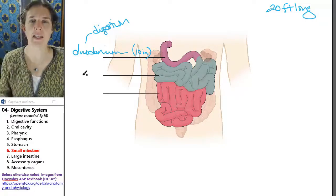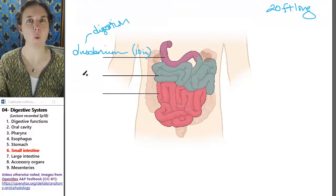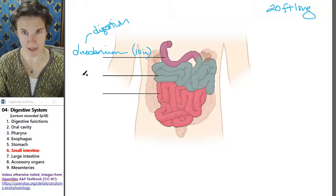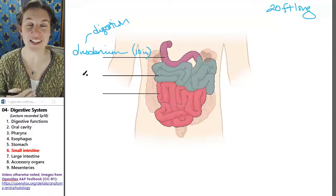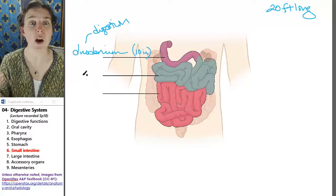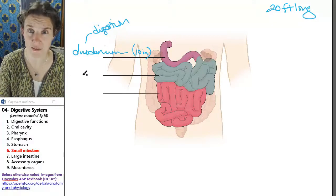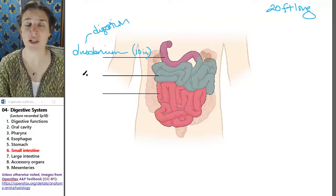you just sent in pH 1 stomach acid into your tender little small intestine. You better adjust the pH. So we also secrete bicarbonate from the pancreas. A whole bunch of stuff gets secreted into the duodenum.